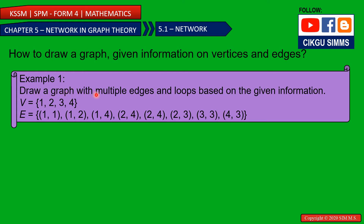Draw a graph with multiple edges and loops based on the given information. The given information includes the list of vertices and the list of edges. The vertices have four elements: 1, 2, 3, 4. You can notice there is a loop, another loop, and then two edges connecting 2 and 4 — which are multiple edges. Let's see how to draw this graph.